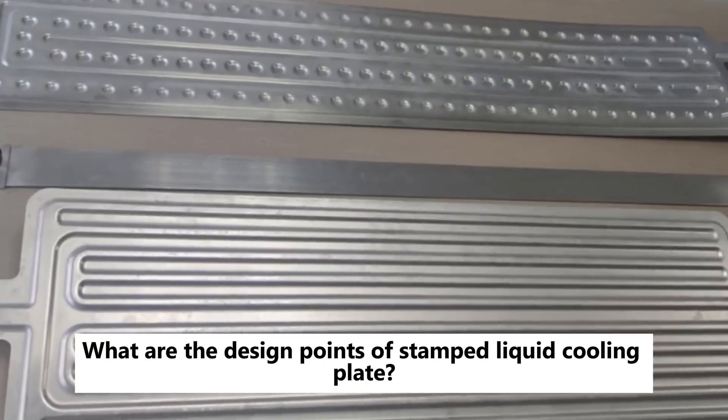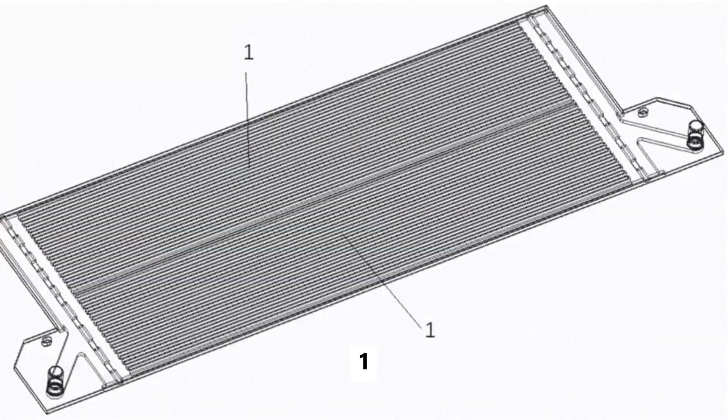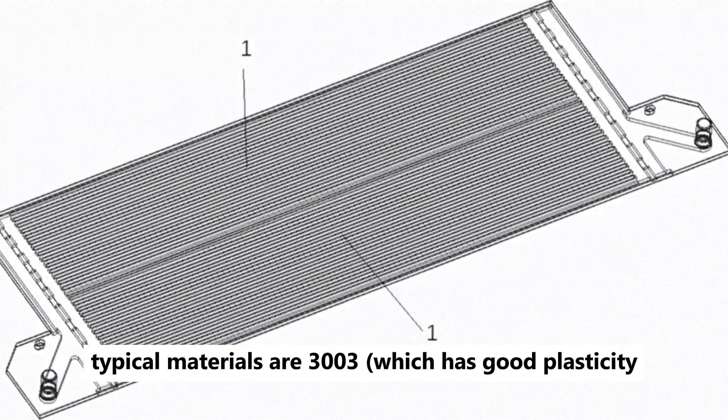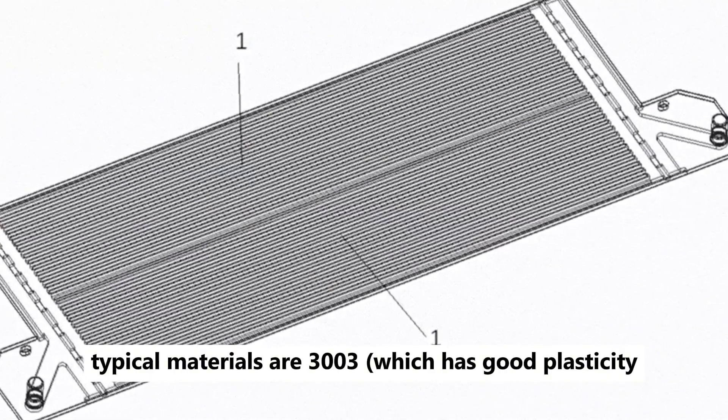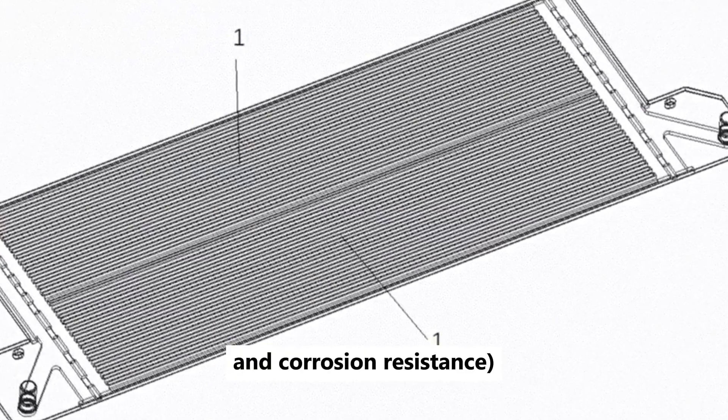What are the design points of stamped liquid cooling plate? 1. Substrate material. Typical materials are 3003, which has good plasticity, weldability, and corrosion resistance,